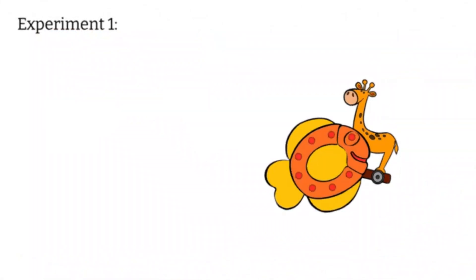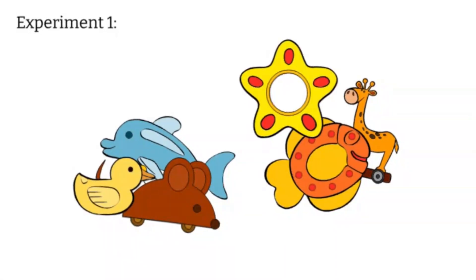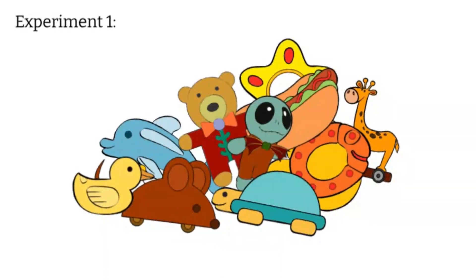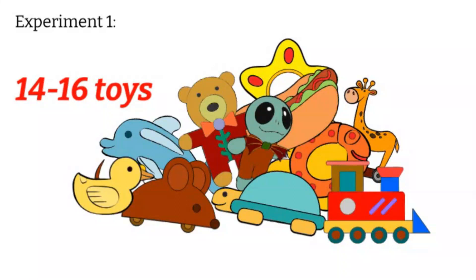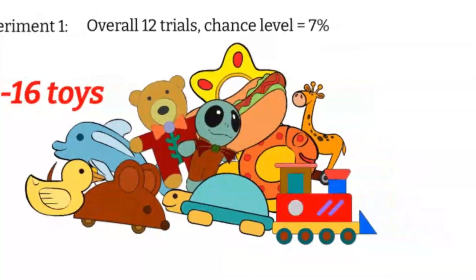After every three trials, the owners placed the toys back, so the number of toys from which the dog could choose always varied from 16 to 14. Each of the new toys was requested two times.